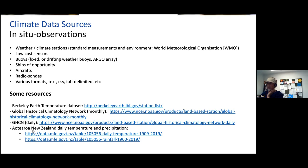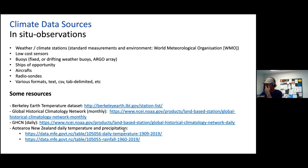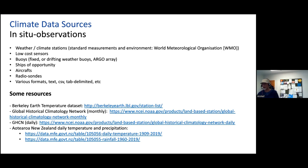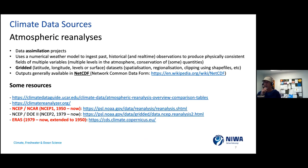Specifically for New Zealand, you can find daily temperature and daily rainfall data on the Ministry for the Environment website. You have to register but the data itself is free. We'll actually use daily temperature data downloaded from that website in one of the examples. All this is freely available data — in some cases you have to register, but you don't have to pay.